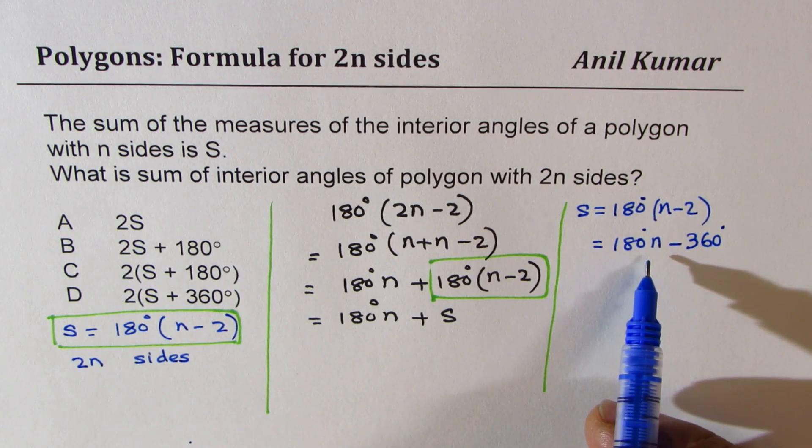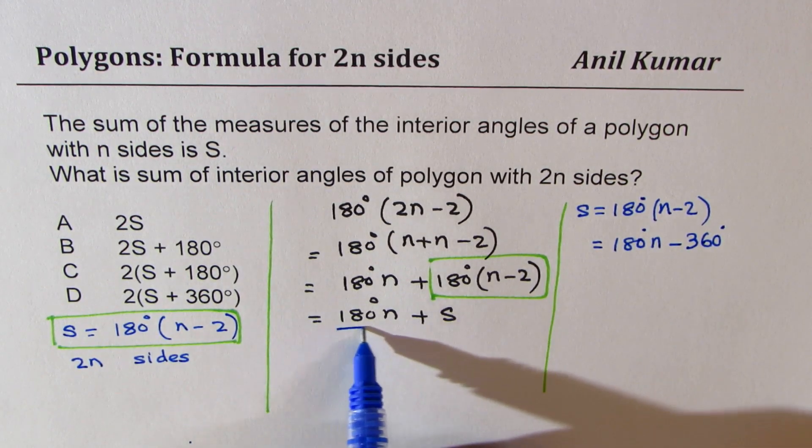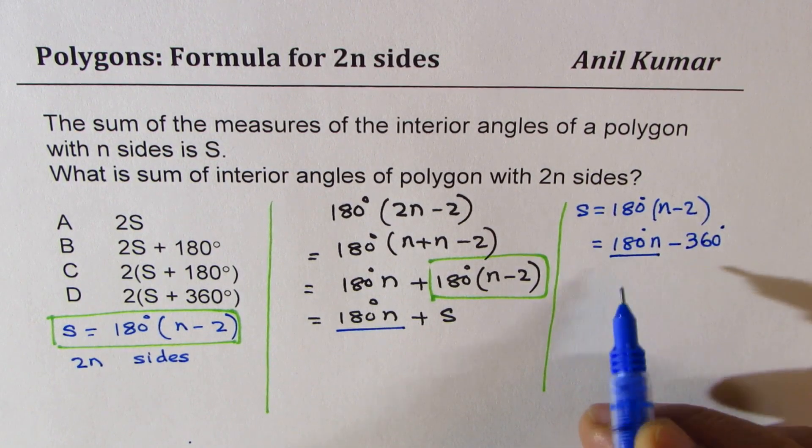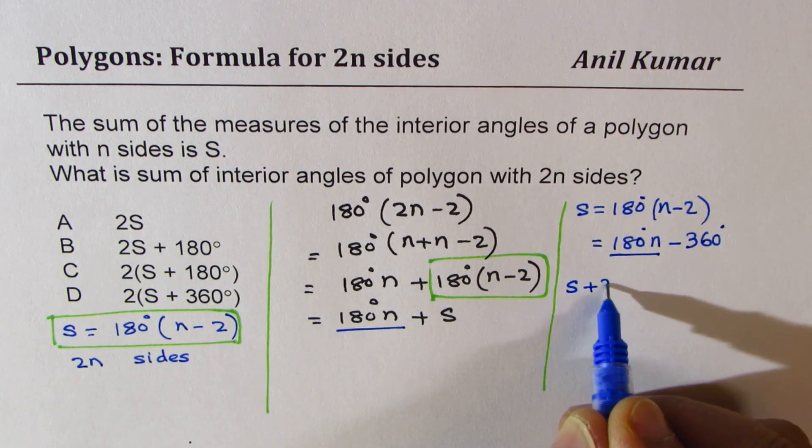So from here, you do get what is 180n, right? So 180n could be written as S plus 360 degrees.